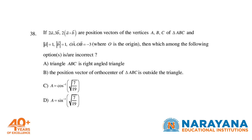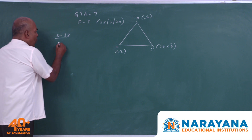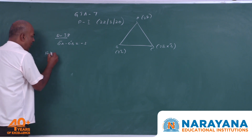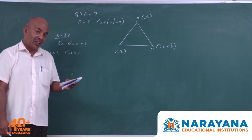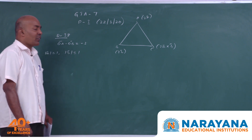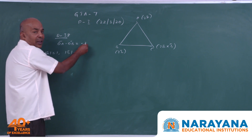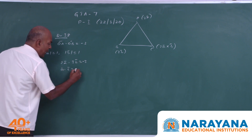Question 38: Triangle ABC has position vectors 2A̅, 3B̅, and 2(A×B). Also given: OA·OB = −3, |A| = 1, and |B| = 1. We need to check which options are incorrect. Using OA·OB = −3: 2A·3B = −3, which gives A·B = −1/2.